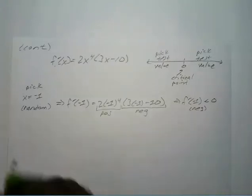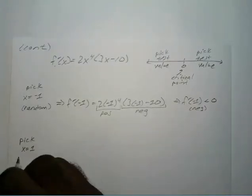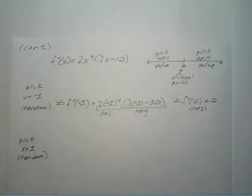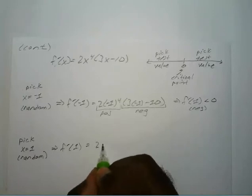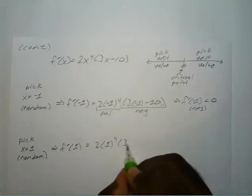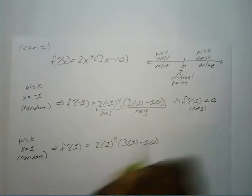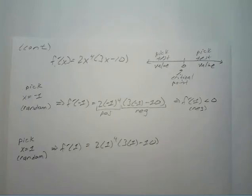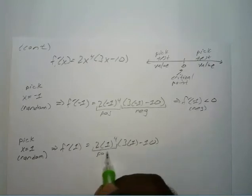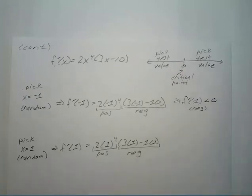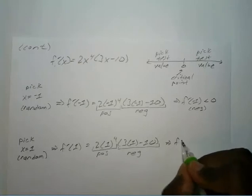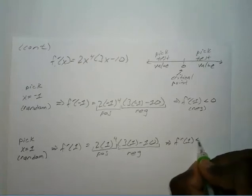For the right test value, pick x equals 1 — again, completely random. The first derivative at 1 equals 2 times 1 to the 4th times 3 times 1 minus 10. This first factor is going to be positive. But 3 minus 10 is negative. So the first derivative at 1 is going to be less than zero — negative again.